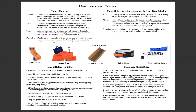Splint bone and joint injuries. Check the patient's distal pulses, motor function, and sensation both before and after splinting. Document your findings in the PCR — patient care report. Apply cold packs to suspected fractures or dislocations to reduce pain and swelling. Elevate the extremity if possible and keep it elevated through transport. Reassess the patient's vital signs and interventions, and make sure distal pulses, motor function, and sensation have improved or have not deteriorated because of the immobilization.